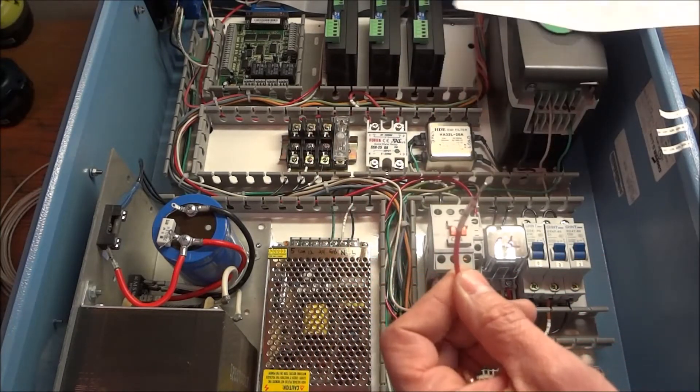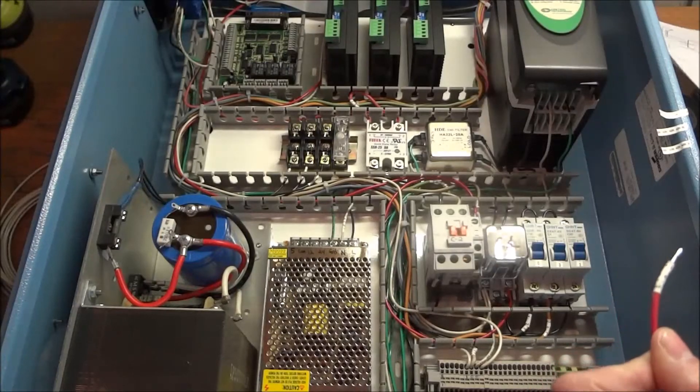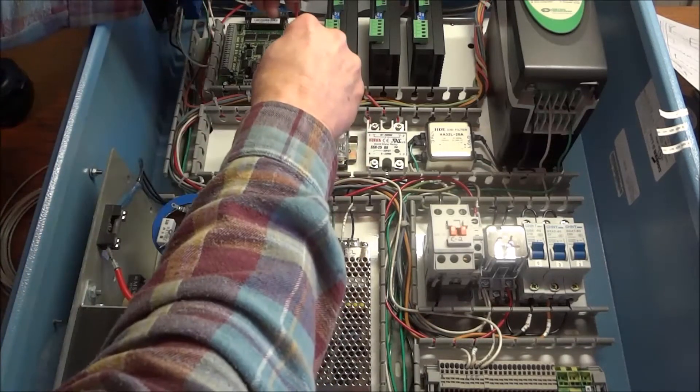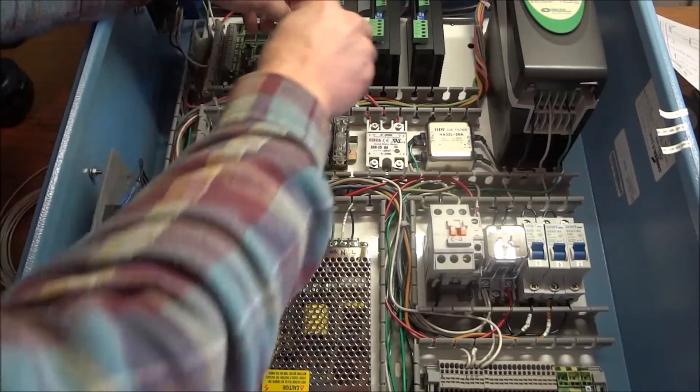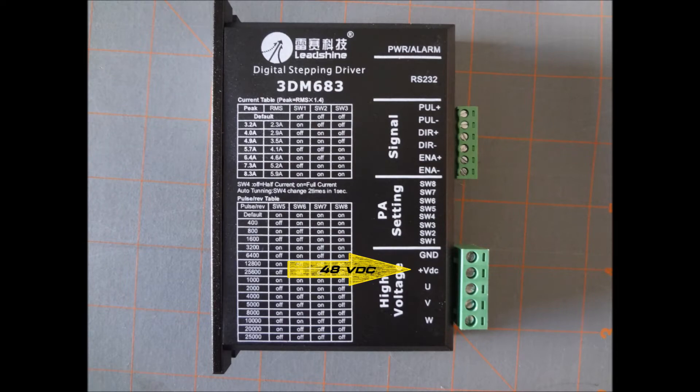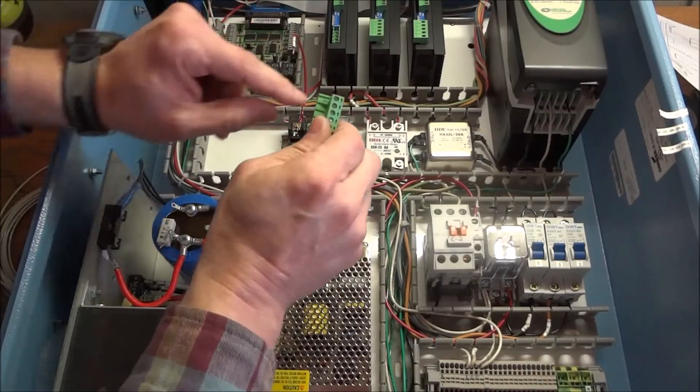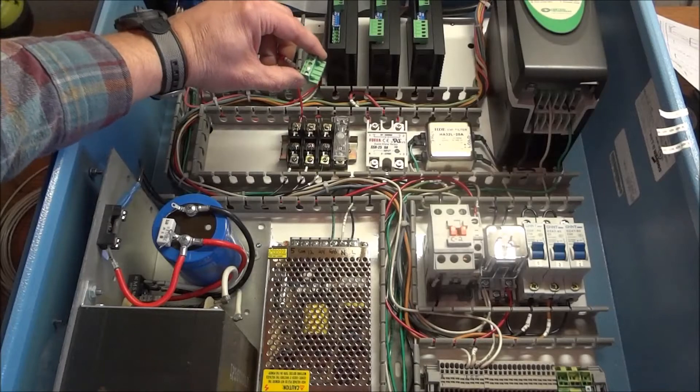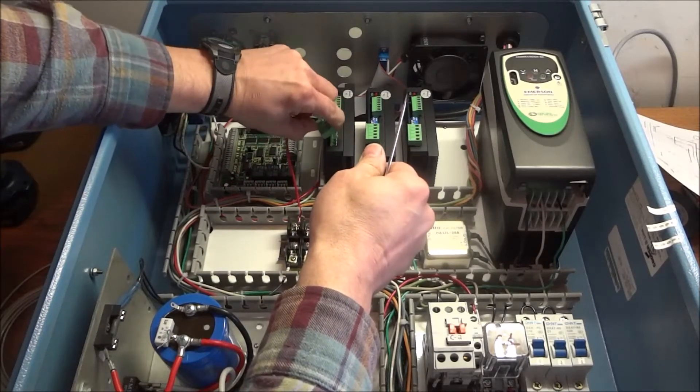Now our first wire that we're going to run is 163, and that's going to go to our X axis stepper driver. It'll come out the top of our X fuse here and then over to our stepper voltage. Now these on my particular drivers pop out, and this second pin here is for our voltage. So I'm just going to screw that in.